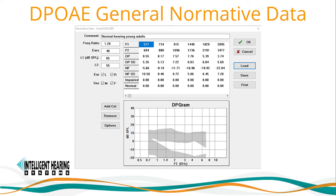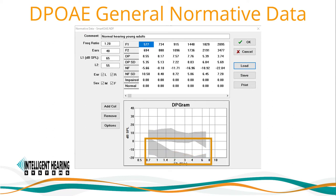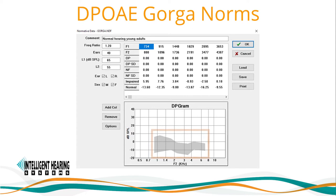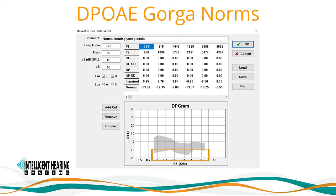You can select your normative data file. IHS offers two sample files: the smartoae.ndf file, which provides two shaded areas — the top shaded region shows where DPoAE responses for normal hearing adults typically fall, while the bottom shaded region shows where typically acceptable noise floors occur. The second sample file is the gorga.ndf file, based on published norms by Dr. Michael Gorga, where a single shaded region is displayed. Responses above the shaded region indicate 95% certainty of being true DPoAE responses, while those below indicate 95% certainty of being absent. Responses within the shaded region require additional audiological testing to determine validity.